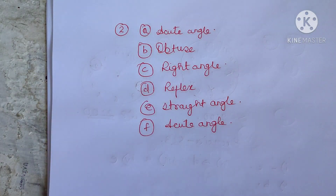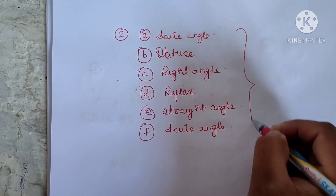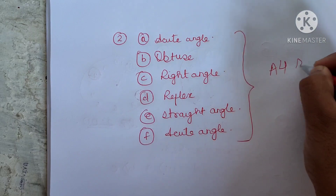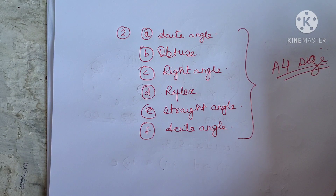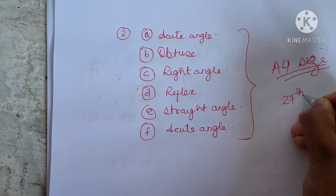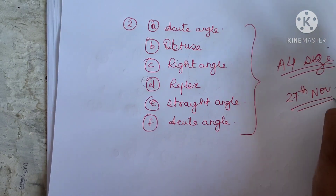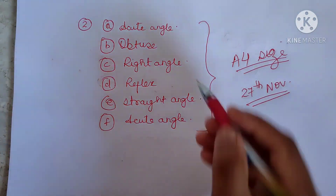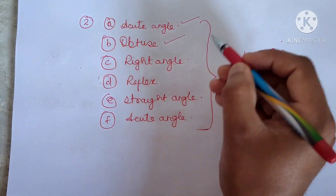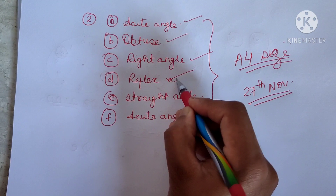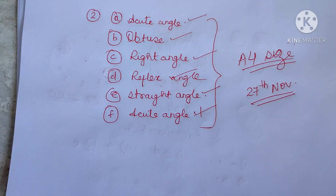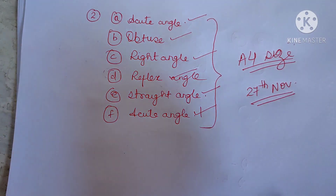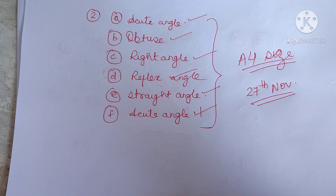Your assignment is to write all the definitions on an A4-size paper and submit it. The last date is 27th November. Submit it to your concerned teachers. Write the definitions of acute angle, obtuse angle, right angle, reflex angle, and straight angle. That's your activity — all the best, do it and submit on time. Bye bye!